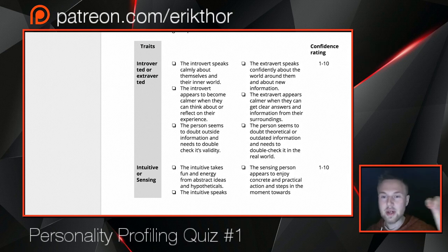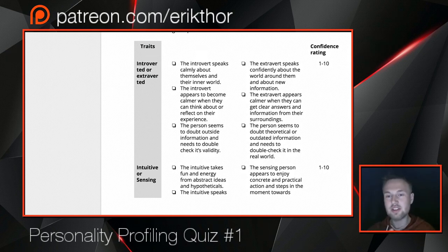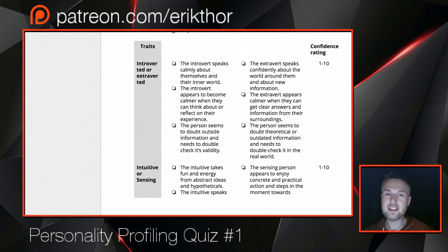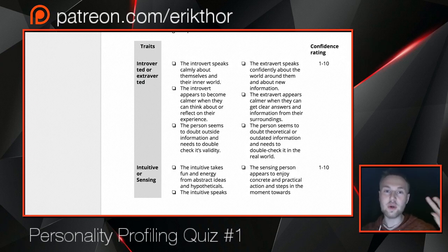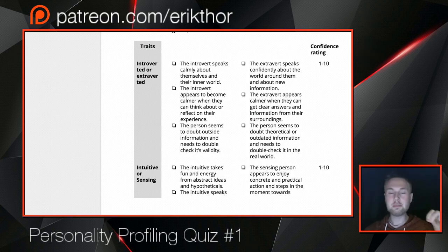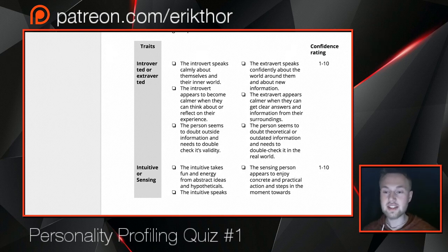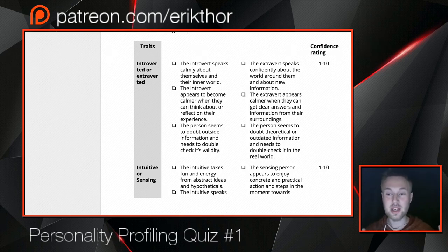Starting with these checklists, check a box when it appears to be true and when another appears to be false. Give yourself a confidence rating from 1 to 10 for how sure you are of what you're seeing — this can teach you when you need more information. Often when I can't type another person, I need more information, and I don't want to fake certainty when I'm really not sure.